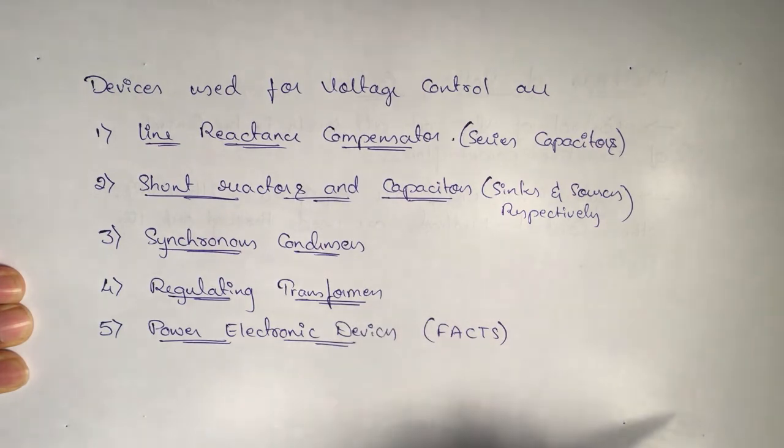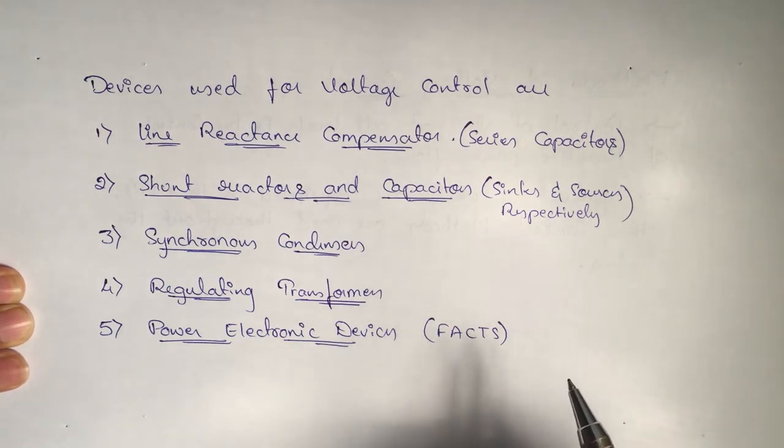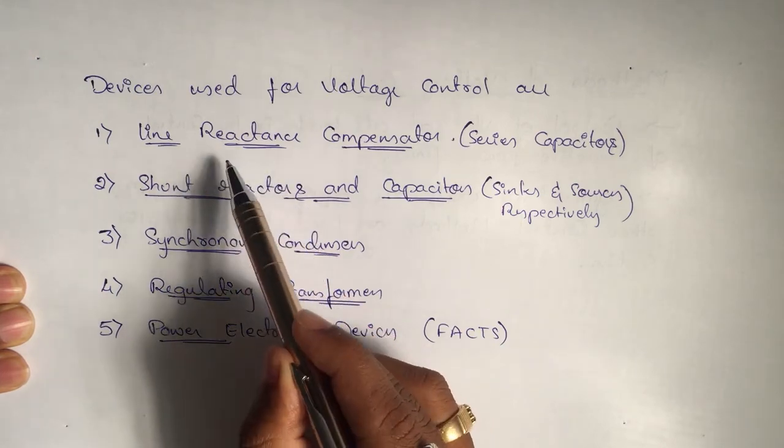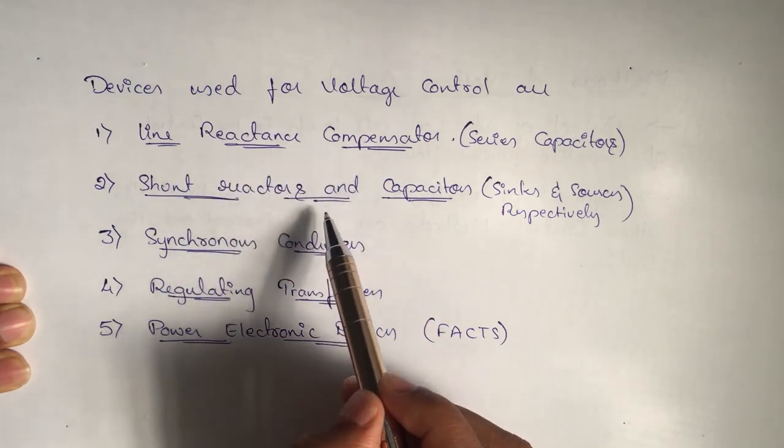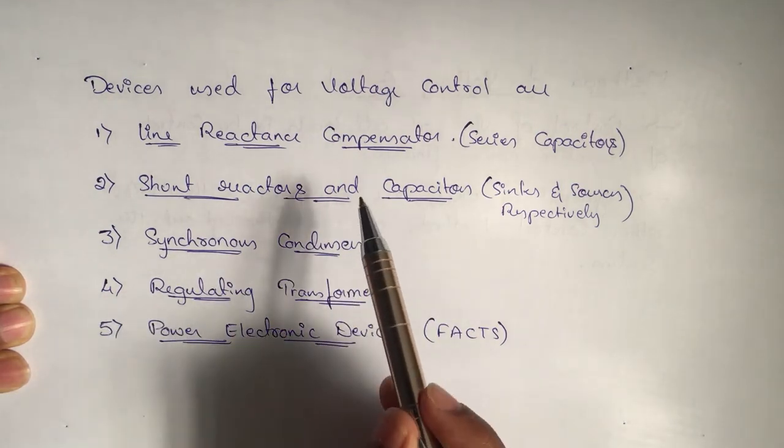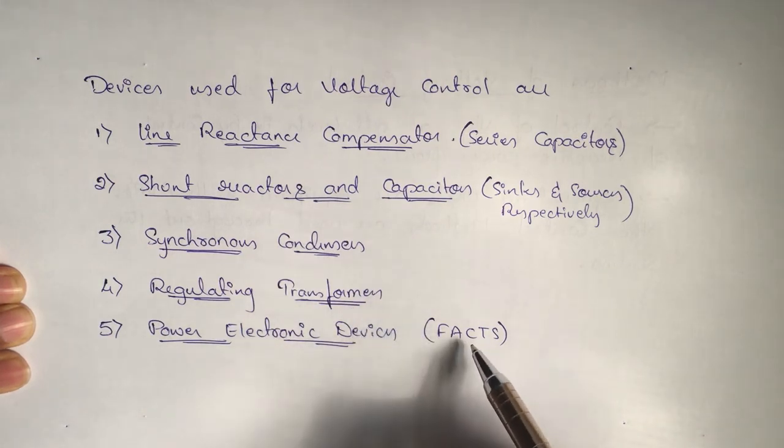Nowadays FACTS is modern technology voltage control technique. As we discussed in our earlier video, these four are conventional voltage control methods: line reactance compensators, shunt reactors and capacitors, synchronous condensers, regulating transformers. Whereas FACTS devices are recent technology or modern technology that we are using to control the voltage levels.